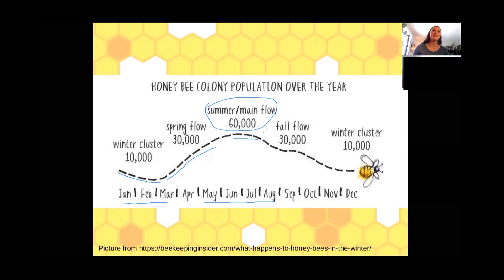As we get to the end of the season — into August and September — the nectar is slowing down, the flowers are finishing, and the bees are preparing for fall. We're seeing a decrease in population, and that decrease continues into October, November, December. Then we go back to January and it starts all over again. That is an overview of what happens in the beehive for general population numbers.